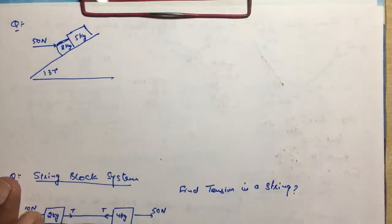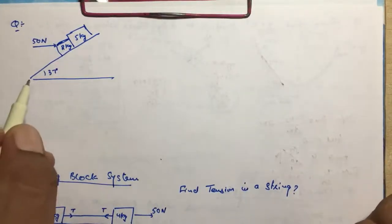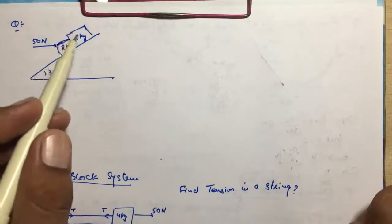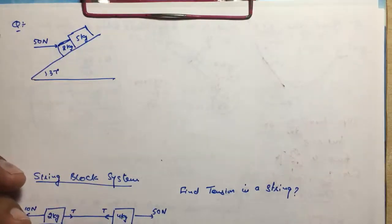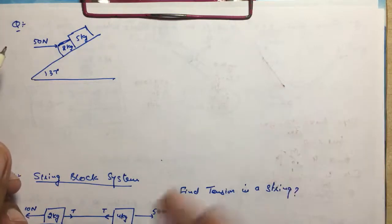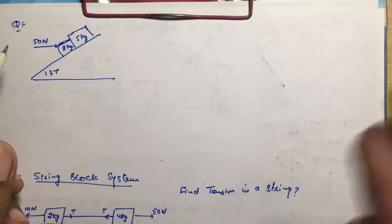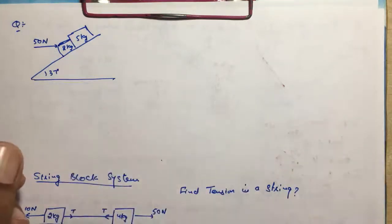Hello, good afternoon students. Yesterday we were doing some questions. We had such a question: when we slide two blocks on an inclined plane, they fall with the same acceleration. So they do not apply any normal action on each other, because they have the same acceleration.